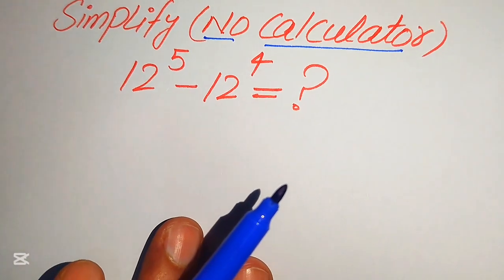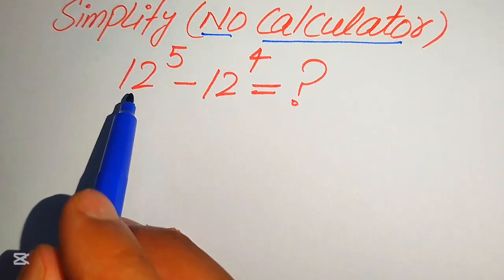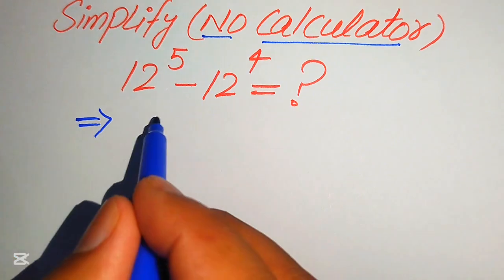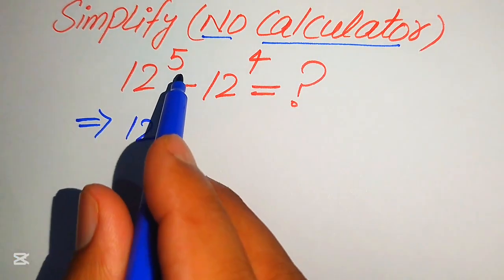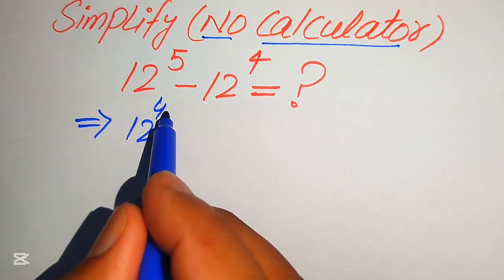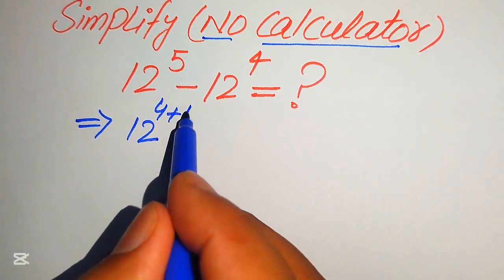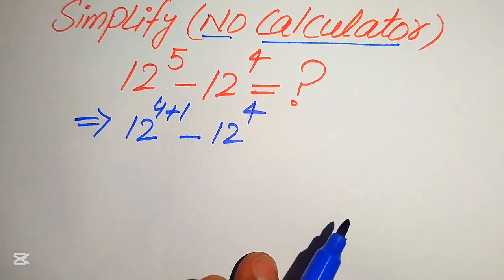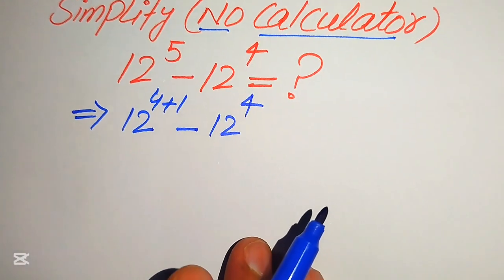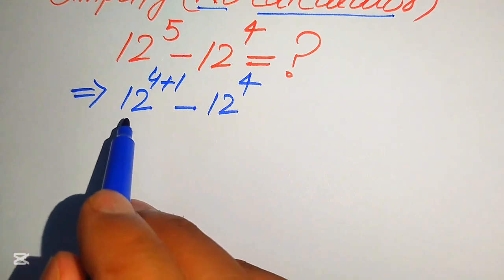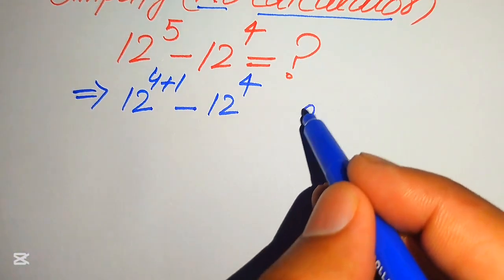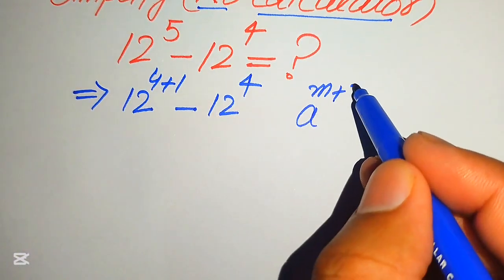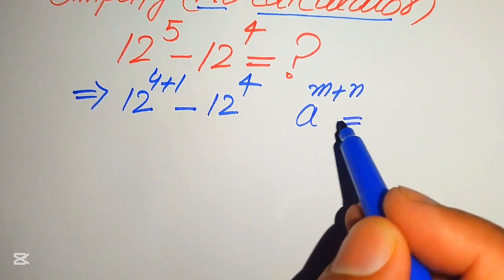The very first step we are going to do is focus on the exponent of this term. We rewrite 12 to the power of 5 as 12 to the power of 4 plus 1, minus 12 to the power of 4. In the next step we focus on this term and apply the exponent law: a to the power of m plus n.